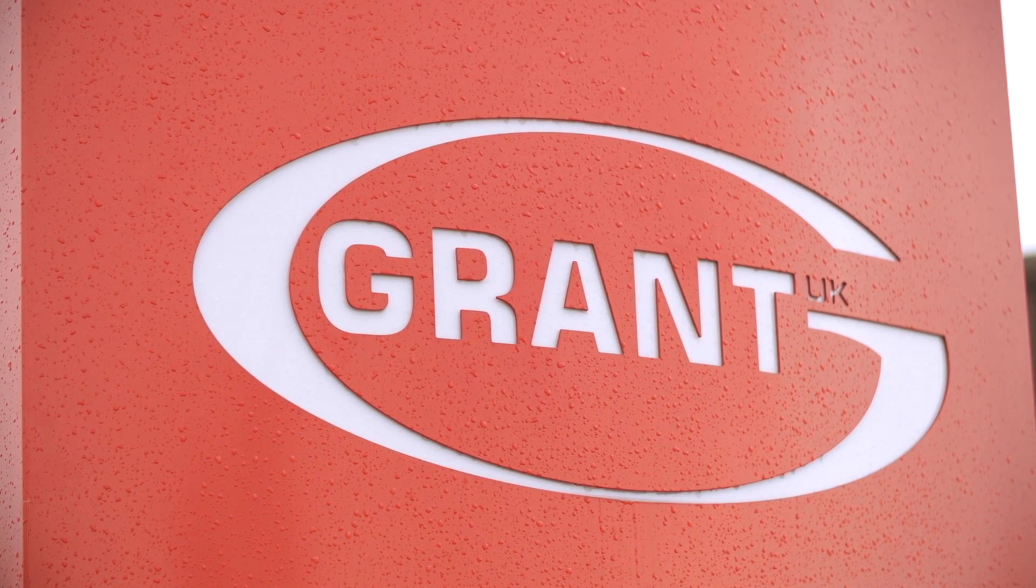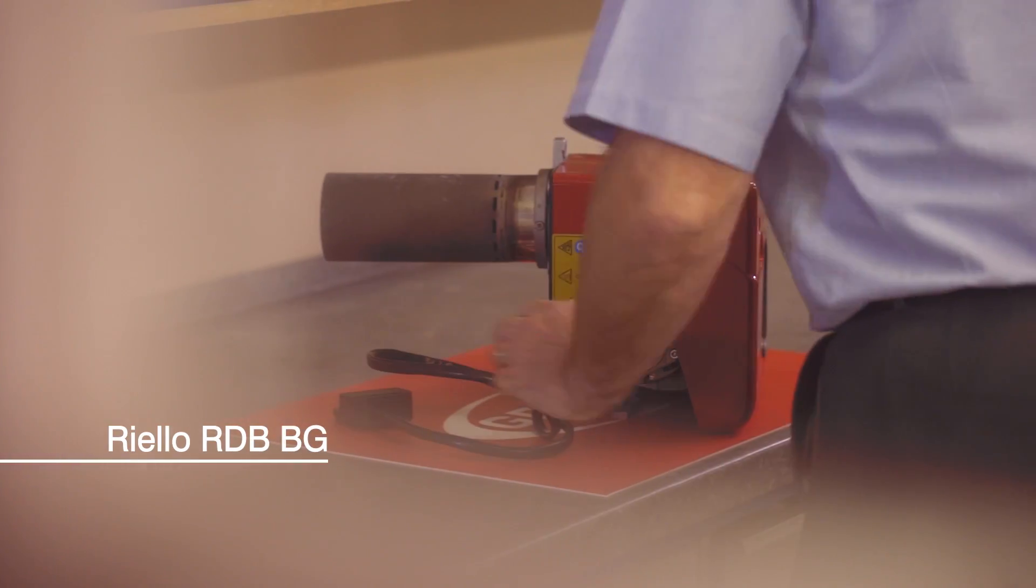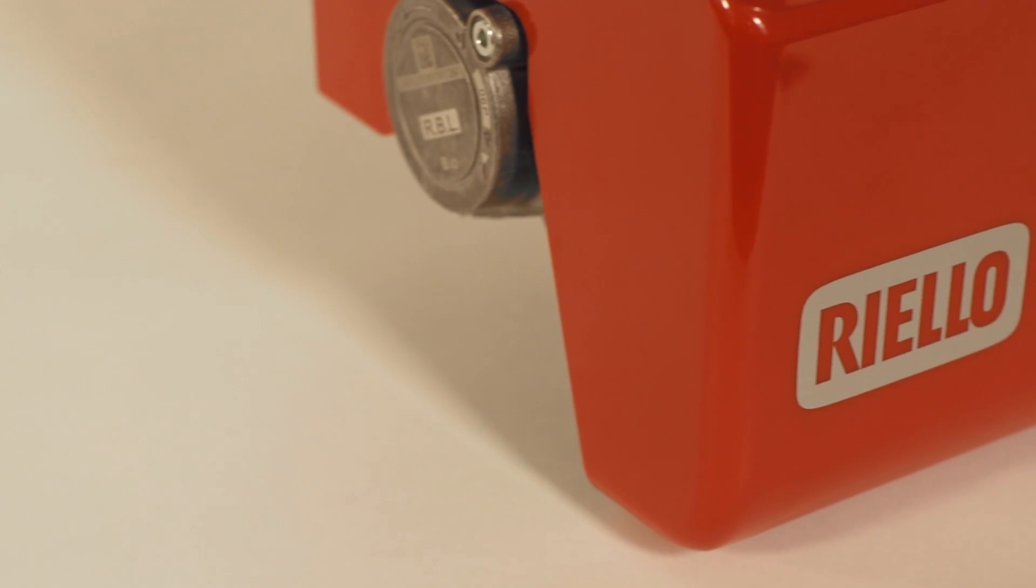This is a brief introduction to the Riello RDB-BG Blue Flame Pressure Jet Burner, used across the Grant Vortex Blue range of high efficiency condensing oil boilers.